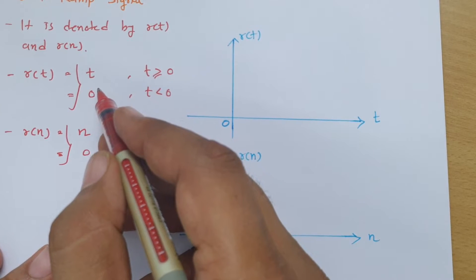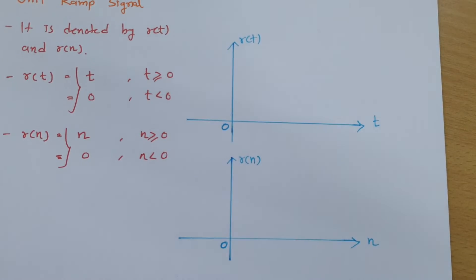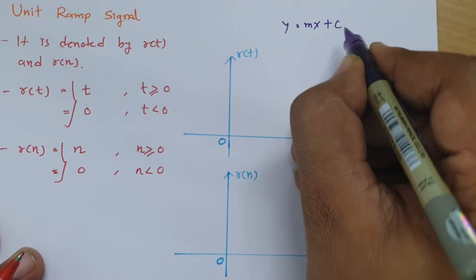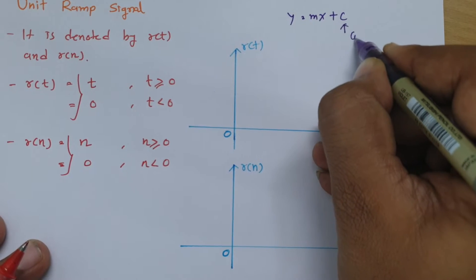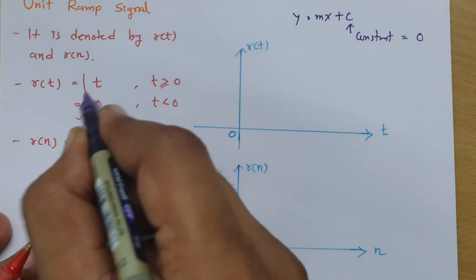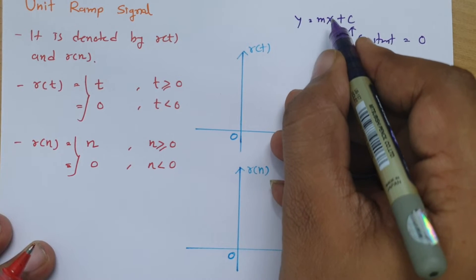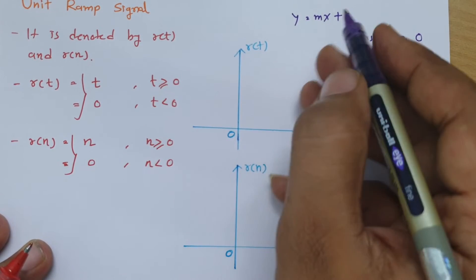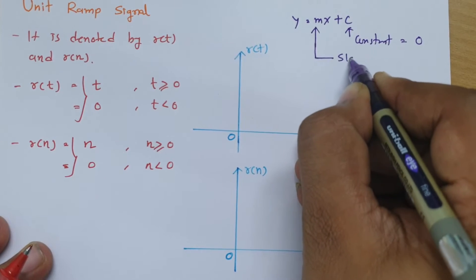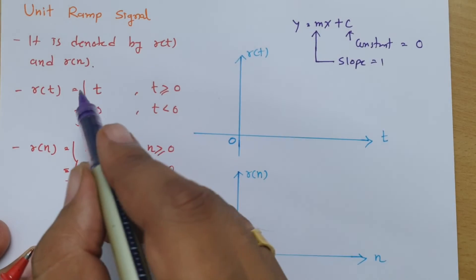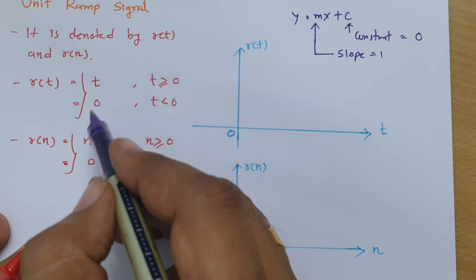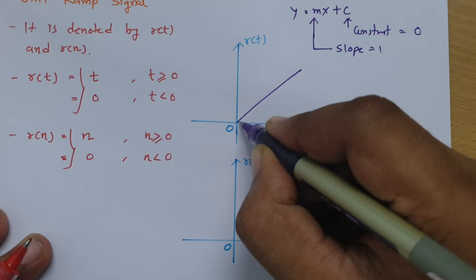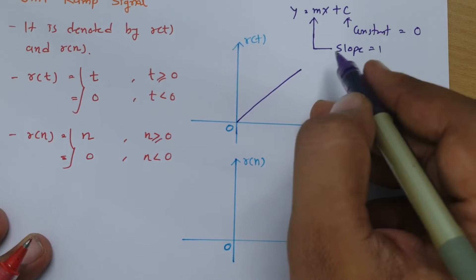r(t) equals t — if you compare this with y = mx + c, the constant c is 0, x is time t, and the slope m equals 1. So when you plot r(t) = t, it is a unit ramp signal with unity slope. It starts from the origin since the constant is 0, and its slope is 1.